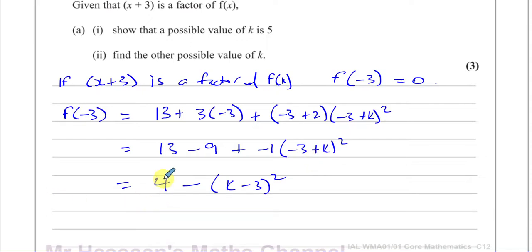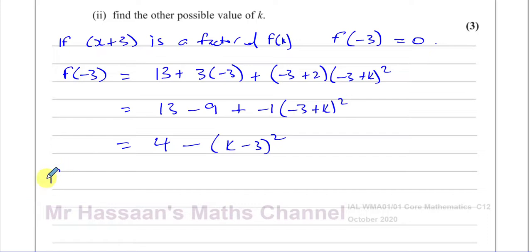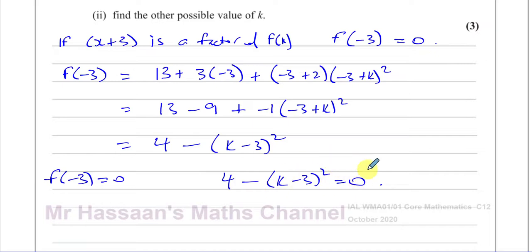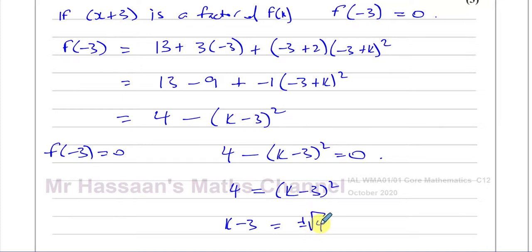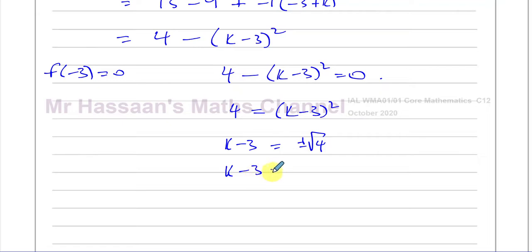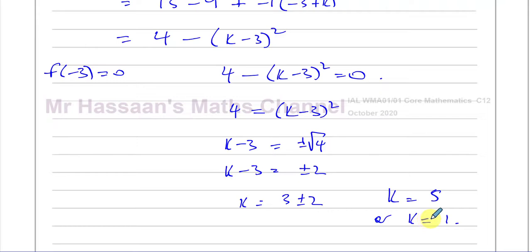We know that this is equal to 0, so we equate f(-3) to 0. So 4 minus (k minus 3) squared equals 0. Instead of expanding, there's a quicker way: add (k minus 3) squared to both sides to get 4 equals (k minus 3) squared. Take the square root of both sides — don't forget there's a positive and negative possibility. So k minus 3 equals plus or minus 2, meaning k equals 3 plus or minus 2. So k equals 5 or k equals 1.